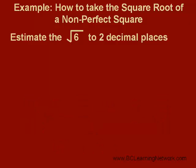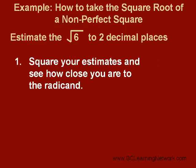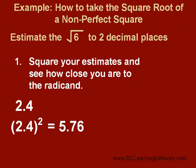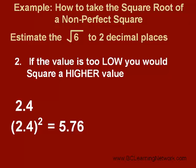Say we wanted to get root 6 accurate to two decimal places. Another way we can check accuracy and get closer values is to square our answers and see how close we come to 6. We'll start with our one decimal estimate of 2.4 — 2.4 squared is 5.76. If your value is too high, you would guess a lower value. If your value is too low, like it is in this case, we should guess a higher value. So, let's try 2.5.